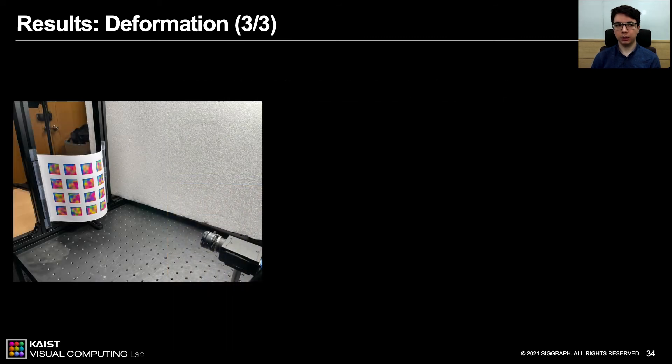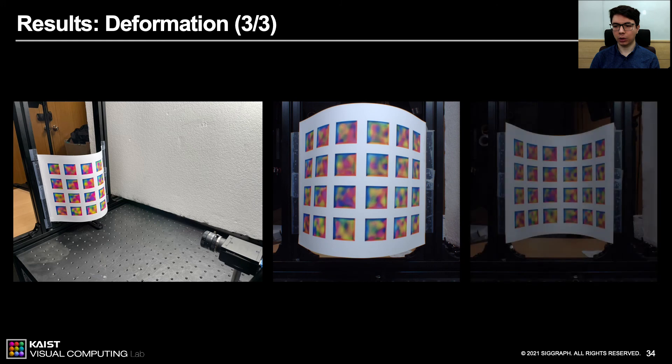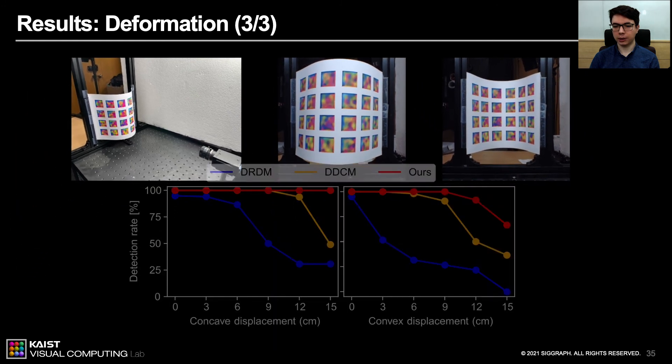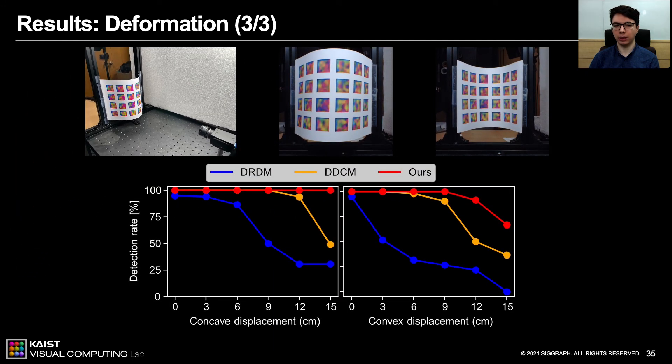We compare the detection rate of our learning-based deformable markers with two existing deformable marker systems on dot patterns. For the fairness of comparison, we replicated an experimental setup with the same physical configuration presented in the original papers of DRDM and DDCM. Then we compare our detection performance on convex and concave surfaces against the performance reported in their paper. Our results validate that our method outperforms these two methods for both cases of deformations.